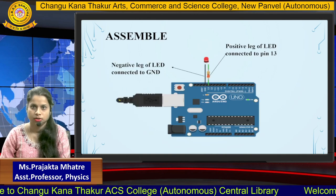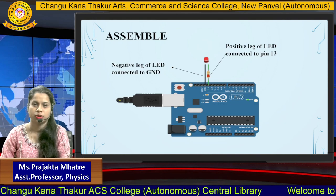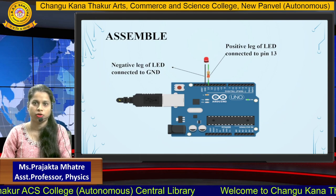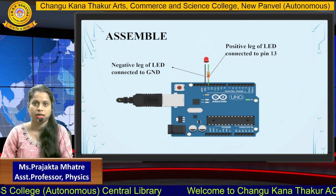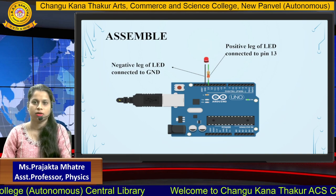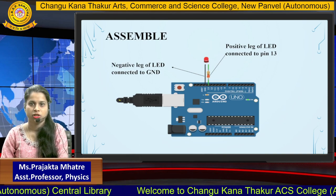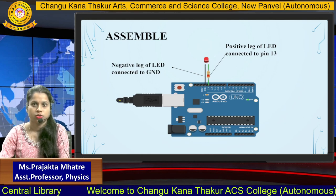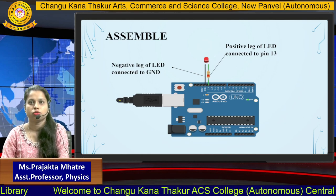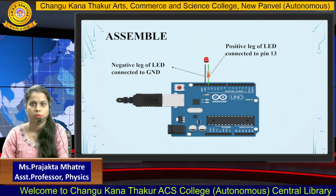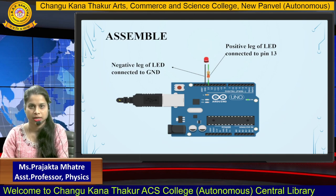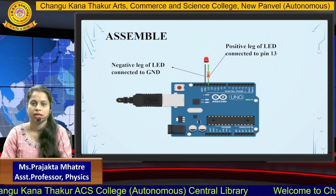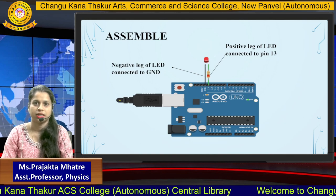A resistor is used to resist the excess amount of current provided to the LED, limiting it to a safe level. This resistor is connected at pin number 13 at the positive end of the LED. The LED's negative terminal is connected to ground.